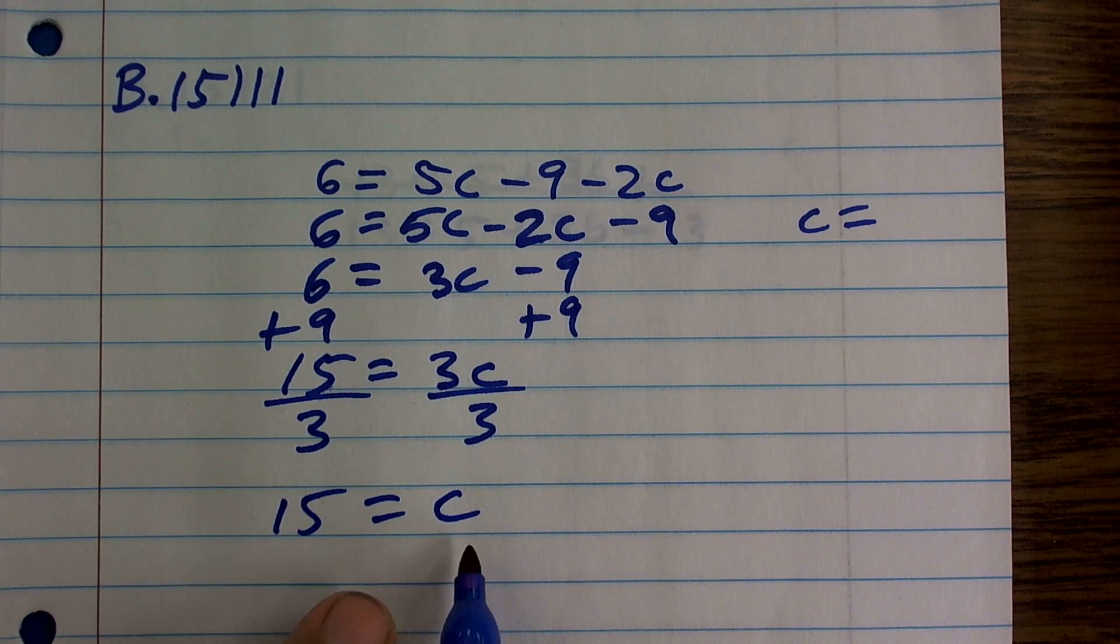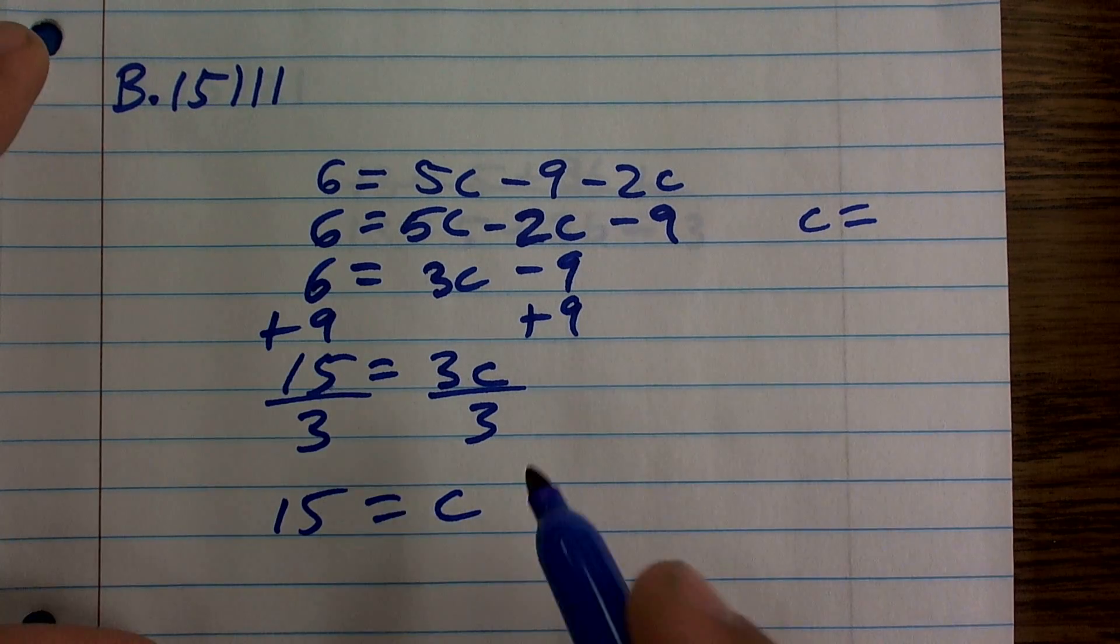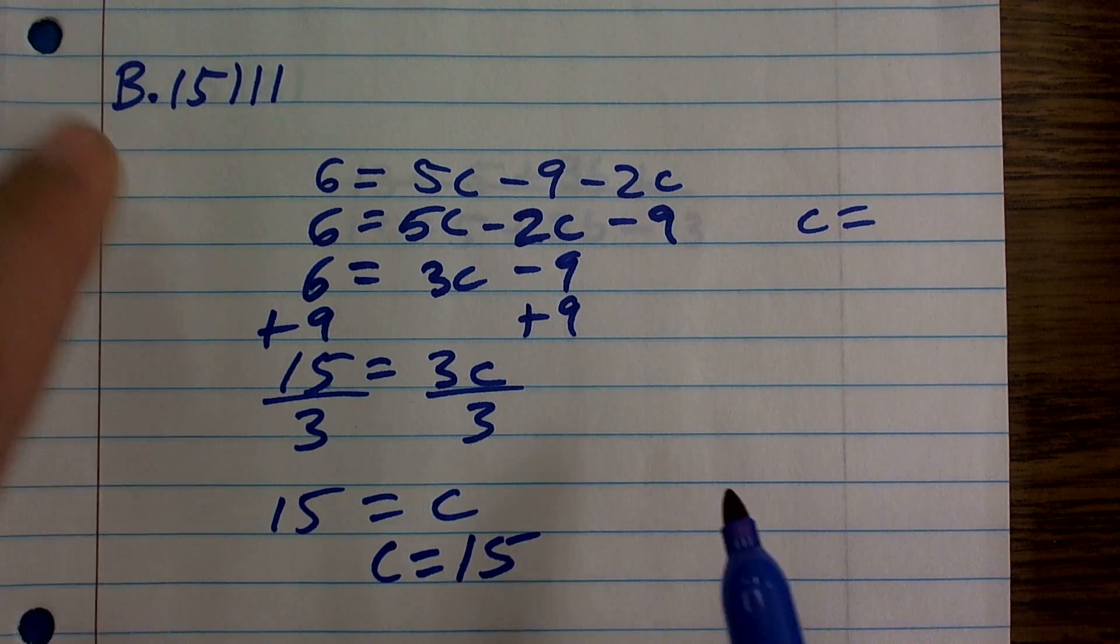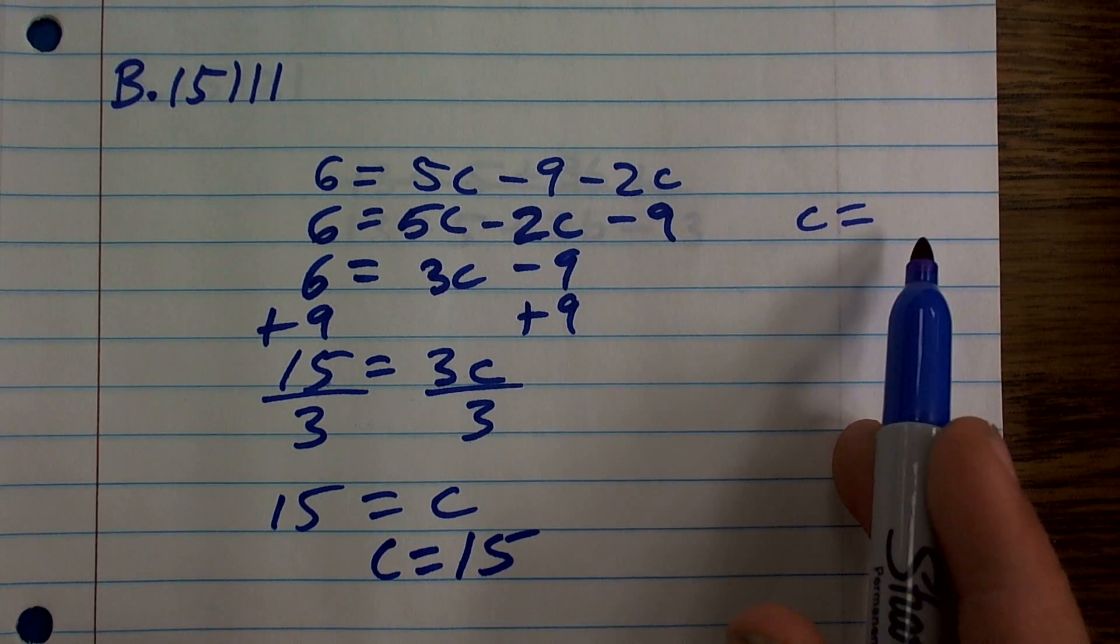Therefore, now I can just use the reflexive property to rewrite it. I'm using some good vocabulary in this example. c equals 15, which is the value we're searching for.